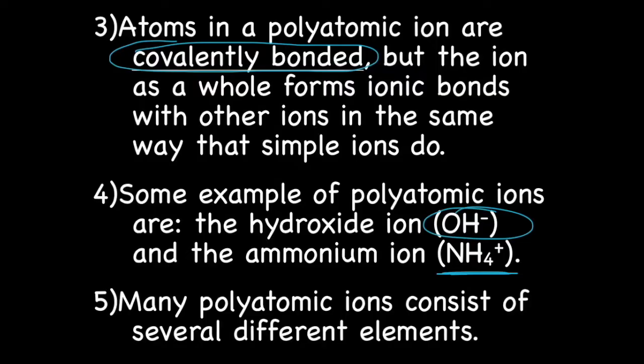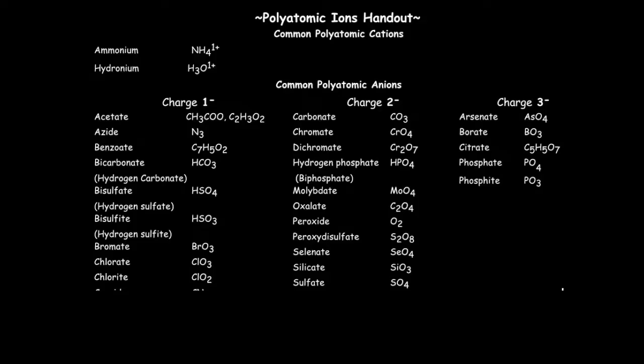I've shown you two examples of polyatomic ion, each containing only two different types of atoms. Truthfully, many of the polyatomic ions consist of several different elements. At this time, if you could grab your periodic table, flip it to the back, you'll see your polyatomic ion handout, and I have a portion of it displayed here, so we can talk about it.